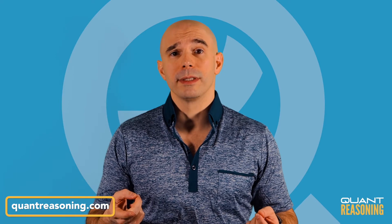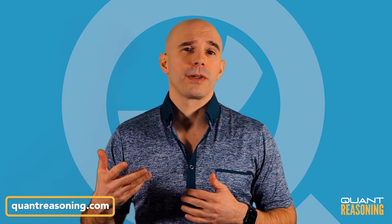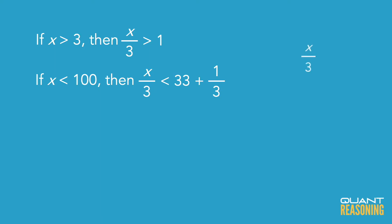Now the question wants to know how many squares of primes could x over 3 be? And we know now that x over 3 is somewhere between 1 and 33 and a third, essentially.